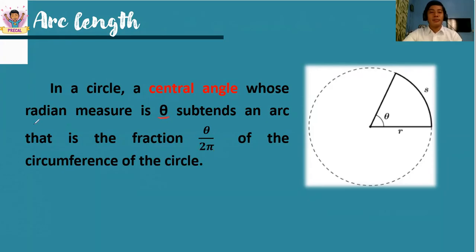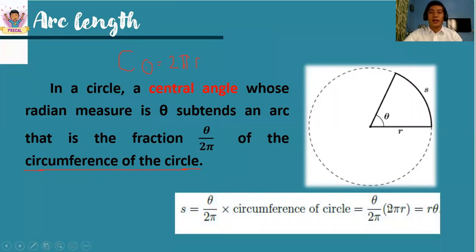Remember that theta must be in radian measure, so we will not be using degree measures in this problem solving. We also relate it to the circumference of the circle. The circumference of the circle is equal to 2 pi r. Relating the measure of the central angle divided by the entire revolution, which is 2 pi in radians, and multiplying it by 2 pi r, which is the circumference of the circle, we can notice that we can cancel 2 pi and 2 pi, so what remains is theta and r as factors.